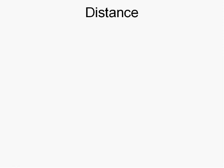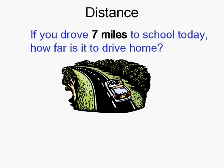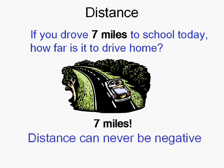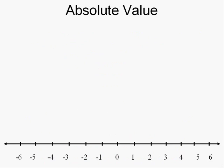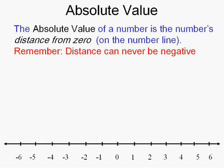Now we're going to have to define distance — it's going to get confusing. If you drove seven miles to school today, how far do you drive home? You drove seven to get here, so of course you drive seven to go home. We're not going to say negative seven, because distance can never be negative. Even if you go backwards or upside down, distance can never be negative. Because when we talk about absolute value, we need to know that definition: the absolute value of a number is the number's distance from zero on the number line, and distance can never be negative — so it's the always-positive value of a number.